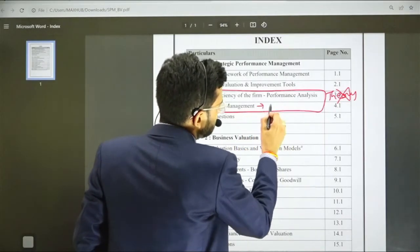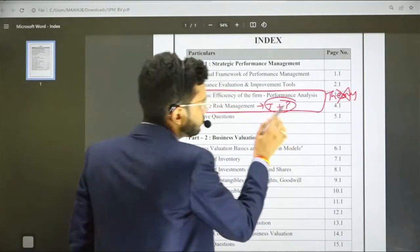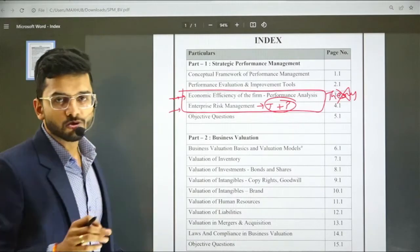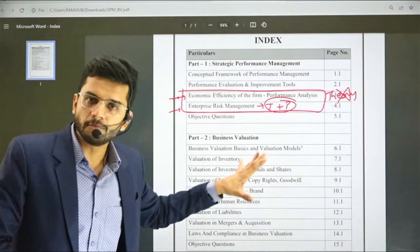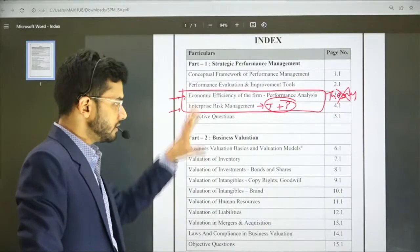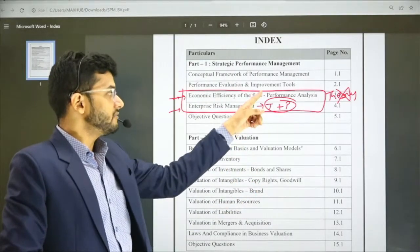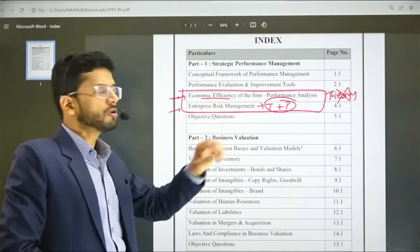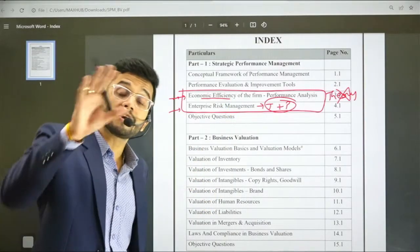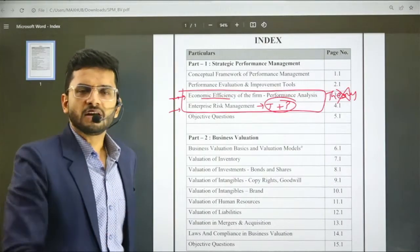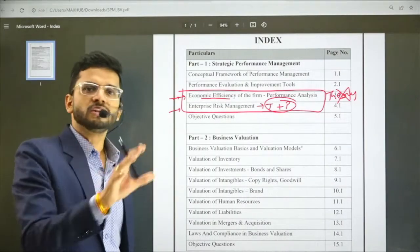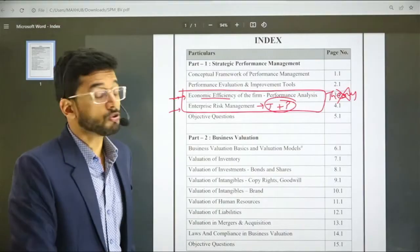But this particular chapter, Enterprise Risk Management, theory as well as practical is important. You have to do both. From Economic Efficiency, just do the practical portion. If you're referring to my book, this is the index of my book. Economic Efficiency has a plethora of practical questions which are solved. If you do these questions, there's no doubt that something around these questions will be framed in your examination.